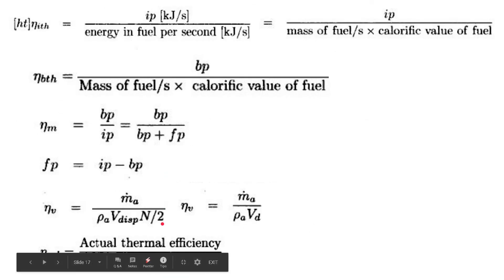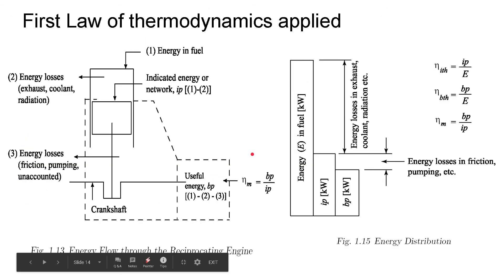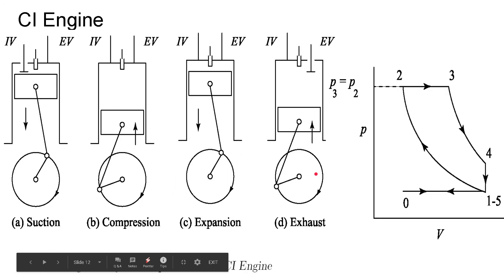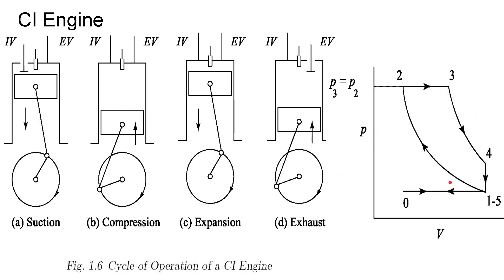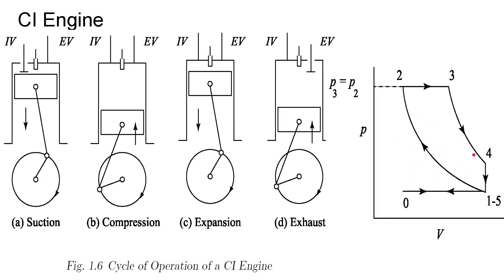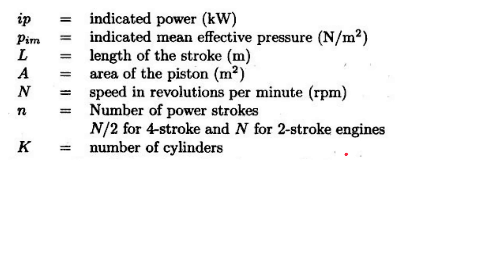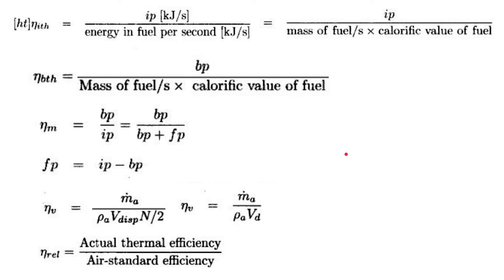Relative or net thermal efficiency is defined as actual thermal efficiency divided by air standard efficiency. The actual thermal efficiency is calculated from the actual fuel-air cycle, whether it is a petrol engine or diesel engine. The air standard efficiency is from the standard Otto or Diesel cycle, and this ratio gives the relative efficiency eta_REL.